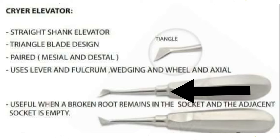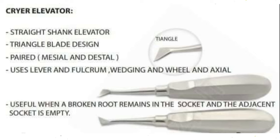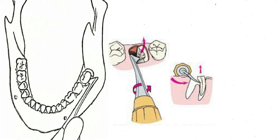There is a very important type of elevator called the Cryer elevator. It has a straight handle and shank design but with a triangular blade. It is paired mesial and distal. It can be used in wedging, levering, and/or wheel and axle. It is used when a broken root remains in the socket and the adjacent socket is empty, as shown here.